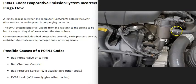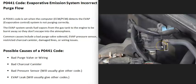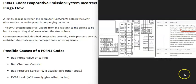One hose goes back to the charcoal canister bringing gas vapors in, and when the engine's running the computer signals the purge valve to open so vapors go to the engine. These valves simply open or shut — they can get stuck closed or stuck open. The purge valve is normally closed, so with no power you shouldn't be able to blow through it, but with power applied you should be able to blow through it. I made a video on testing the purge valve while it's still in the vehicle — link is in the description.